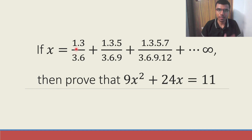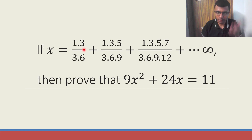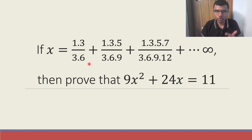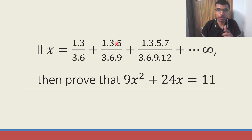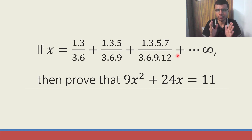If you observe this question, the pattern is already pretty decent. We just need to improvise it a bit. We need to add something. There are 2 terms in the numerator, 2 terms in the denominator — product of 2 terms here, product of 2 terms here. Then product of 3 terms in the numerator: 1, 3, 5; and product of 3 terms in the denominator: 3, 6, 9. So likewise, the pattern is pretty good but something is missing.